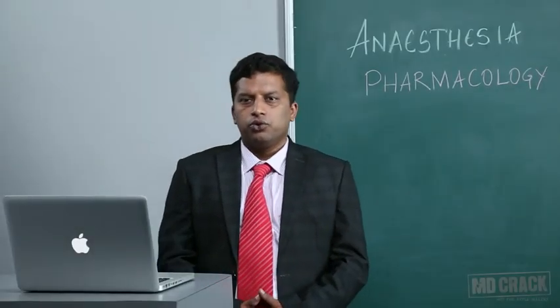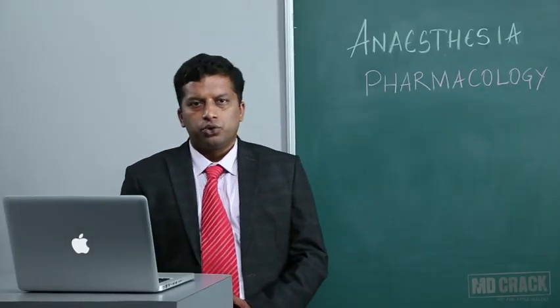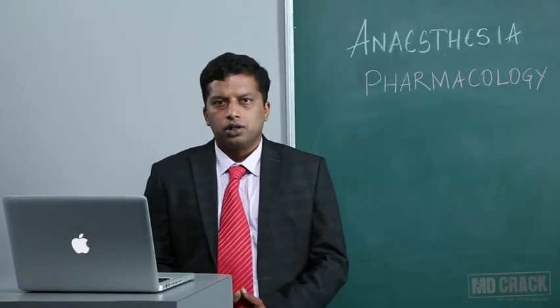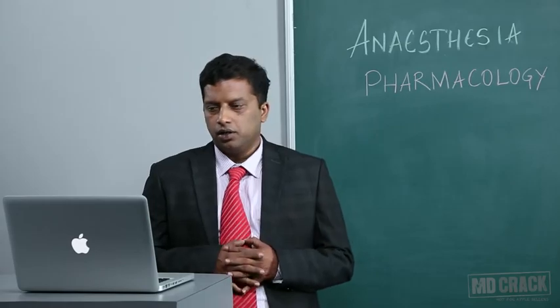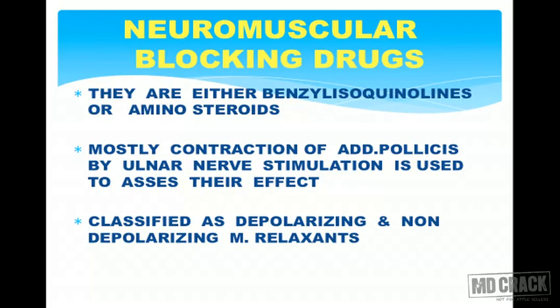In this session I am going to talk about neuromuscular blocking drugs or muscle relaxants in detail. They are either benzyl isoquinolines or aminosteroids, and are classified into two types: depolarizing muscle relaxants and non-depolarizing muscle relaxants.